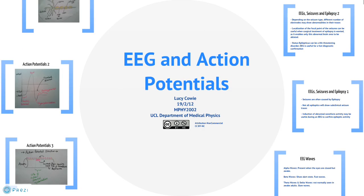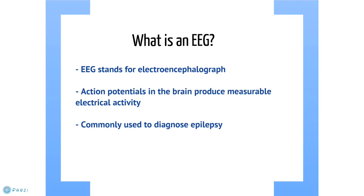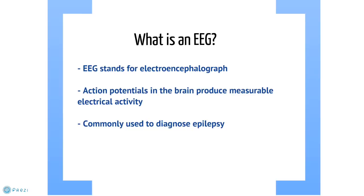EEG and action potentials. What is an EEG? EEG stands for electroencephalograph. This is a method by which the electrical changes in the brain, produced when neurons fire, are measured using scalp electrodes. Traces are produced of the electrical activity and can be viewed for abnormalities.